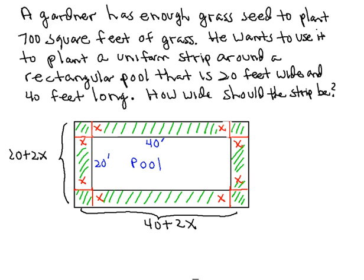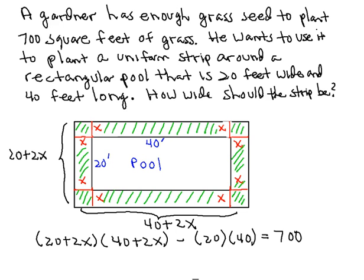Now, if we were to take the area of that outer rectangle, which would be 20 plus 2X times the quantity 40 plus 2X, and if we subtract from that the area of the pool, which would be 20 times 40, would you agree that would give us the area of the strip around the pool, which we're told is 700 square feet?